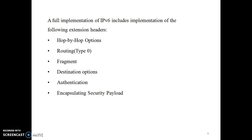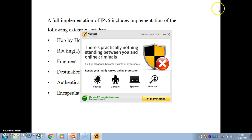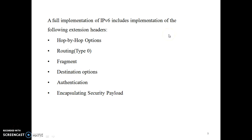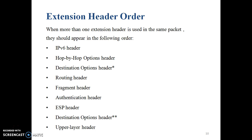A full implementation of IPv6 must support the following extension headers: hop-by-hop options, routing, fragment, destination options, authentication, and ESP — which stands for Encapsulating Security Payload. The recommended extension header order is: IPv6 header, hop-by-hop option header, destination option header (single asterisk), routing header, fragment header, authentication header, ESP header, destination option header (double asterisk), and upper layer header.